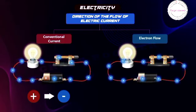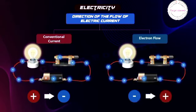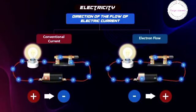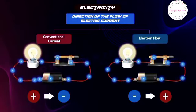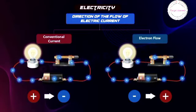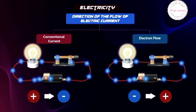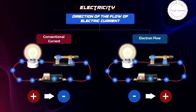Electron flow: In reality, electric current in a conductor, such as a metal wire, is due to the flow of electrons. Electrons are negatively charged and move from the negative terminal to the positive terminal of a power source. This is the actual physical flow of electric charge in most conductive materials.